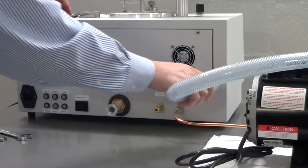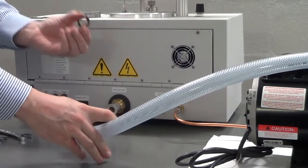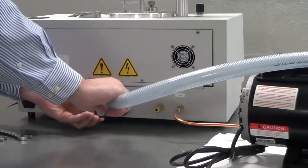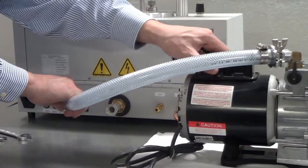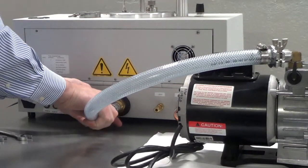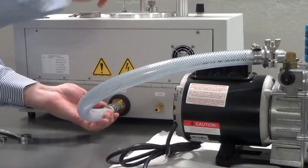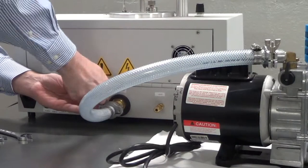Now you can connect the pump to the back of the system. This is a KF25 fitting, so you don't need any tools. Be sure the O-ring is aligned properly and tighten the clamp. Hand tight is sufficient.